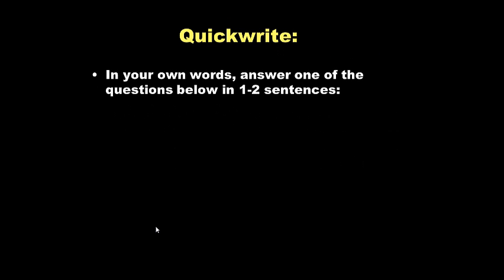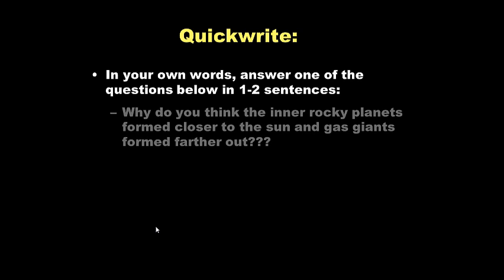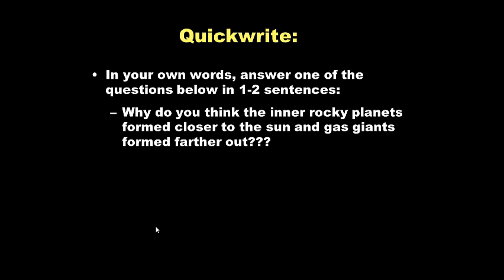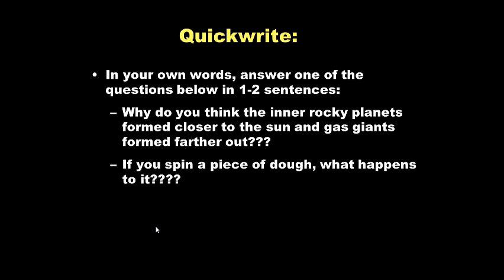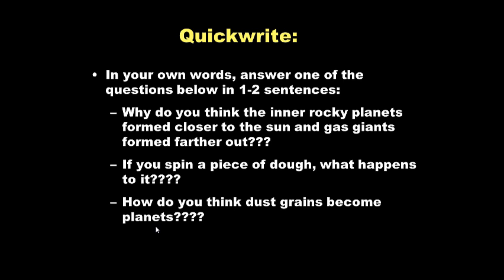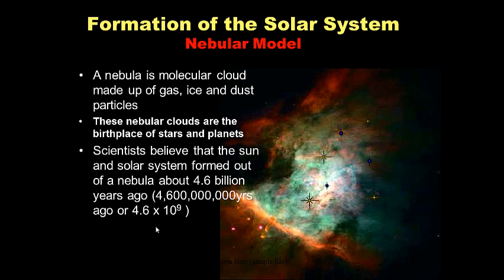For your quick write — five points at the top of your notes: Why do you think the inner rocky planets formed closer to the Sun and the gas giants formed farther out? Remember, the inner planets are made of iron and silica; the outer gas giants are made mostly of hydrogen and helium. If you spin a piece of dough, what happens to it? And how do you think dust grains become planets? Think back to how our moon formed if it helps. Go ahead and pause this while you write.